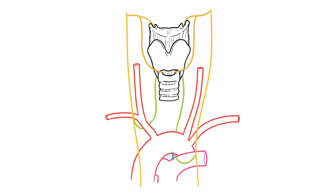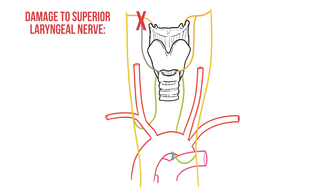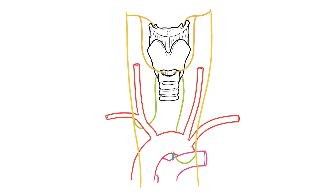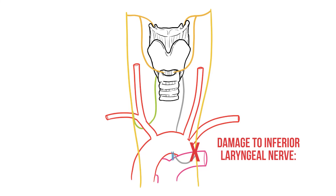Damage to the laryngeal nerves can affect the patient's voice. Damage to the superior laryngeal nerve and loss of cricothyroid function on the injured side will limit changes in pitch and the ability to make explosive sounds, often making the voice sound more monotone. However damage to a recurrent or inferior laryngeal nerve will disrupt the other intrinsic muscles, leaving the patient with a hoarse voice.